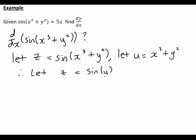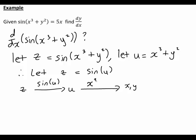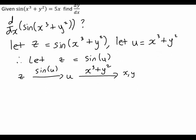It can often help to write down how this has been put together. We've rewritten z in terms of u as sin(u), and in turn u has been rewritten in terms of x and y as x³ + y². So if we want to find the derivative of this expression with respect to x, that means finding dz/dx. Because z is a function of u and u is a function of x, by the chain rule that will be dz/du multiplied by du/dx.